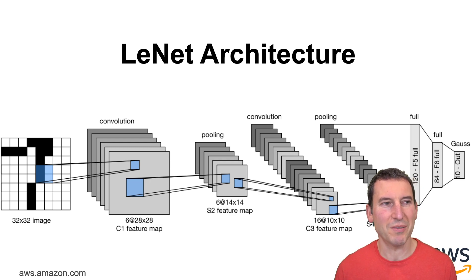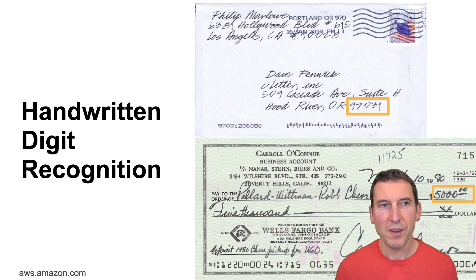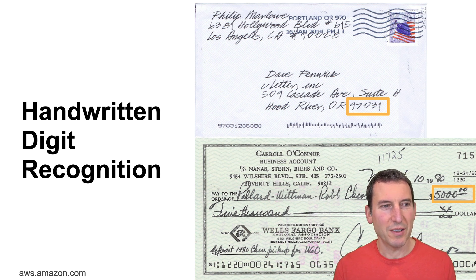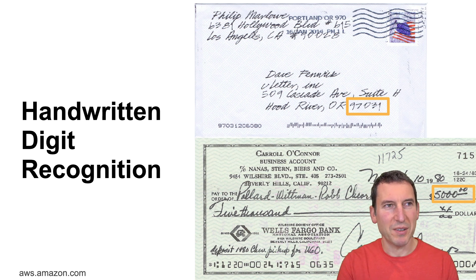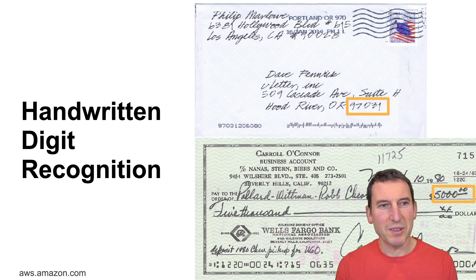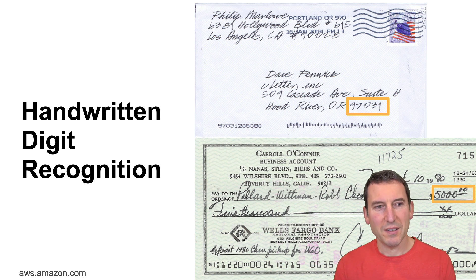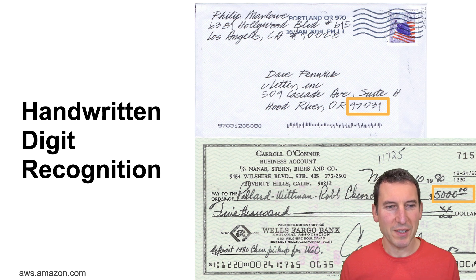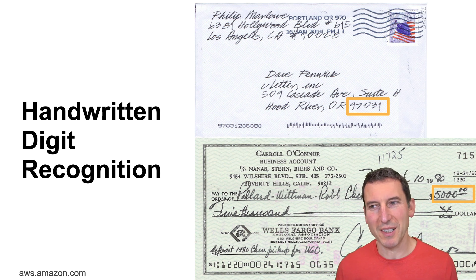This is actually LeNet-5. What it was used for was handwritten digit recognition on checks. The problem that AT&T Bell Labs had to solve at the time was they had all those checks from banks and from the US Postal Service, and they wanted to recognize handwritten digits and the dollar amount on checks. They didn't really verify whether that was the correct signature.